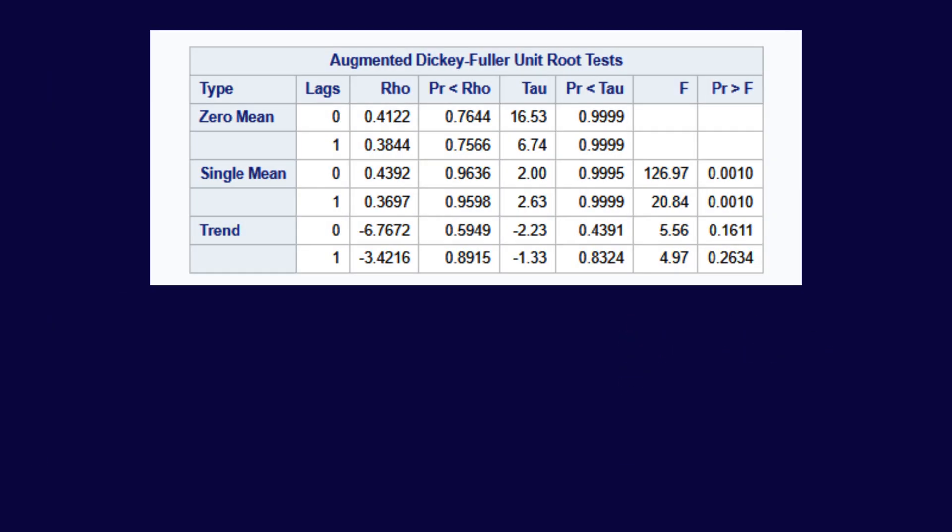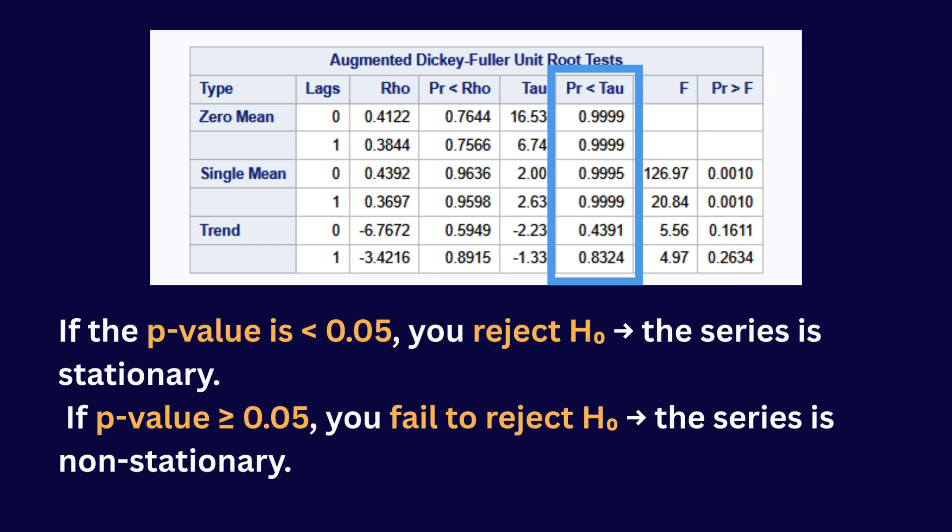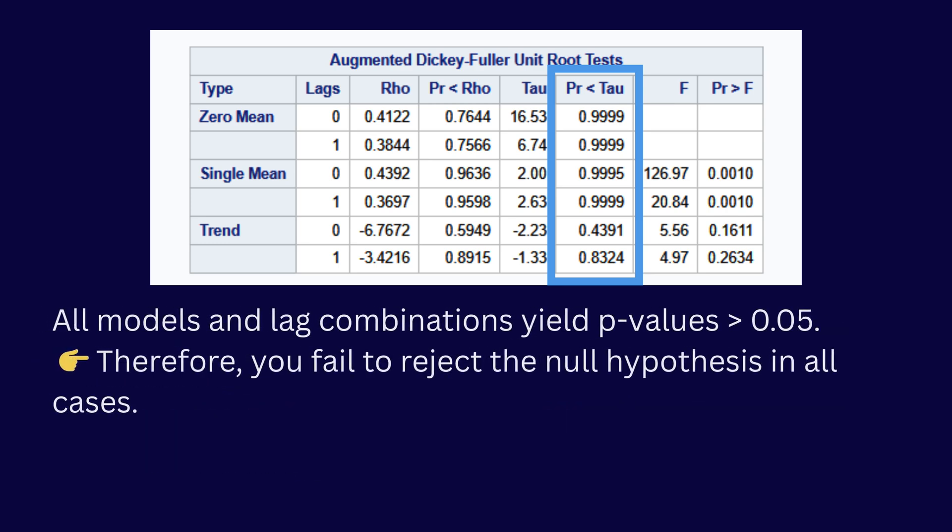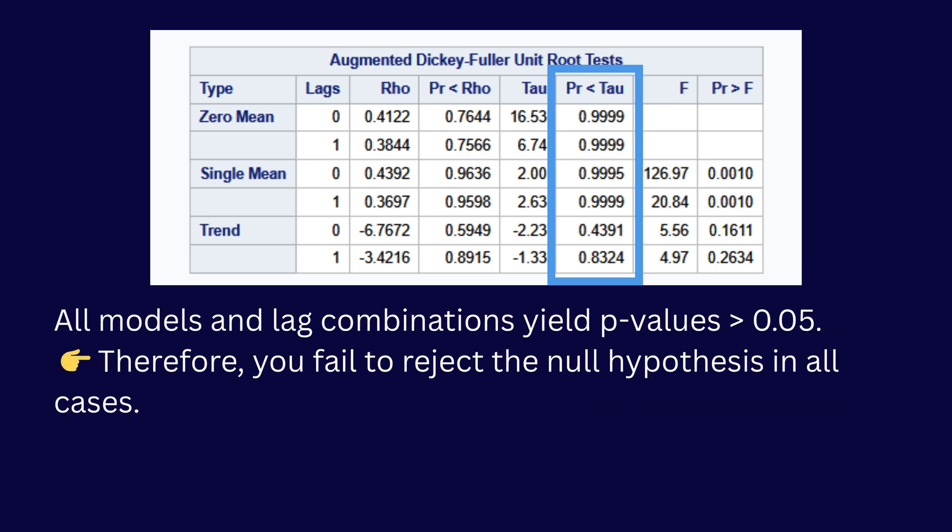The key statistic to look at is tau and its p-value. Our null hypothesis is the series has a unit root, non-stationary. Alternative hypothesis is the series is stationary. If the p-value is less than 0.05, you reject the null hypothesis, meaning the series is stationary. If p-value is greater than 0.05, you fail to reject H0, meaning the series is non-stationary. Here, all p-values are greater than 0.05.